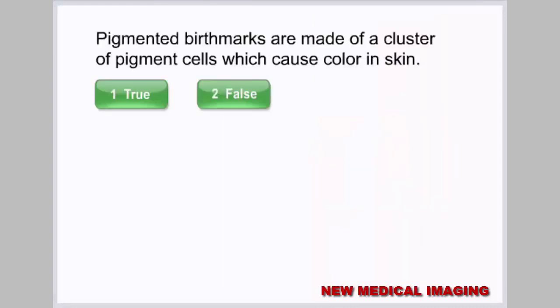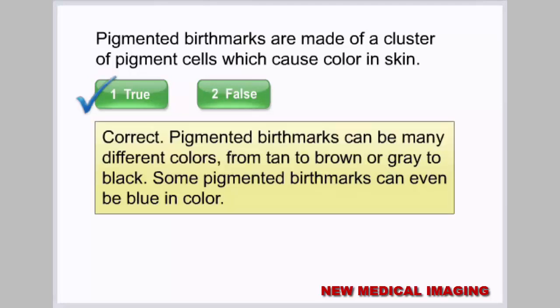Pigmented birthmarks are made of a cluster of pigment cells which cause color in skin — select true or false. Correct: pigmented birthmarks can be many different colors, from tan to brown, or gray to black, and some can even be blue in color.